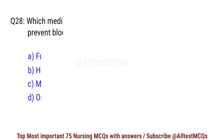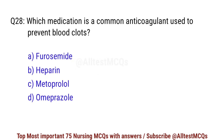Question number 28. Which medication is a common anticoagulant used to prevent blood clots? Correct option is B: Heparin.